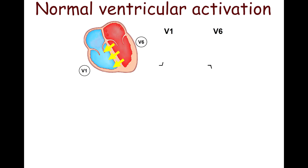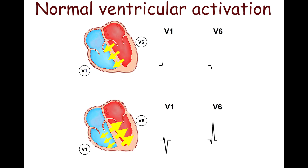Normally, ventricular activation begins with ventricular septum depolarization, producing the R wave in lead V1 and the Q wave in lead V6. Subsequent to septal depolarization, the right and left ventricles undergo depolarization. Due to the significantly larger size of the left ventricle, the electrical vector directed towards it exceeds that of the right ventricle, producing the deep S wave in lead V1 and the higher R wave in lead V6.